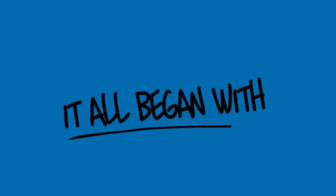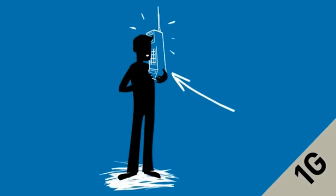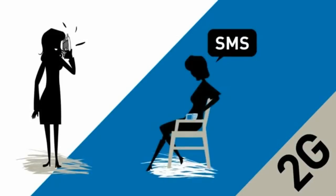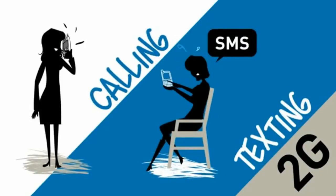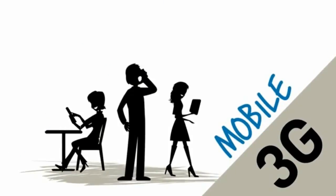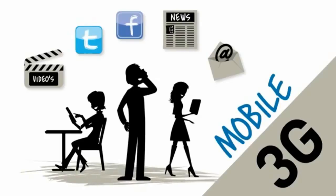It all began with 1G — bulky analog mobile phones that only allowed voice calls. Then came 2G, digital mobile communication that combined calling and texting. Then came 3G; finally the internet went mobile. With a simple mobile device you could send emails, read the newspaper, check your favorite social media, watch basic videos, and so on. But now there's 4G.